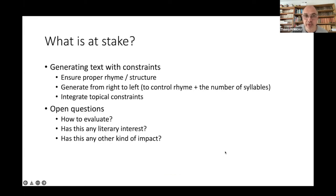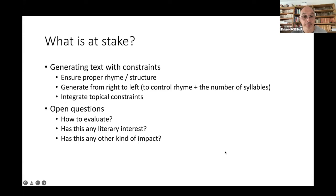To what extent can we say that a machine is creative? What does that take? It's generating text with constraints. The main thing is to ensure the prosody and structure of the poem. We need to generate from right to left, to control what is at the end of each verse. What people generally want to do is integrate topical constraints so that the poem has some coherence. There are lots of open questions from a research point of view: how to evaluate, does this have any literary interest, and what other kinds of impact does it have?